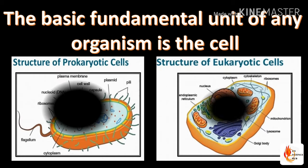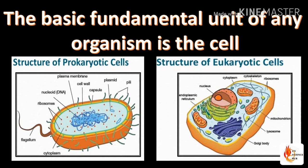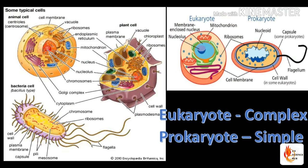Before entering into the topic, you should know some basic information about the cell. The cell is considered as a fundamental unit of any organism. There are two types of cells: one is the prokaryotic cell and the other one is the eukaryotic cell. Prokaryotic cells are the primitive cells, while eukaryotic cells are the advanced cells.